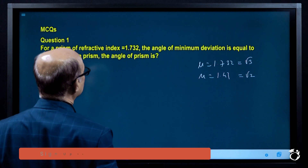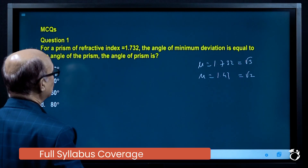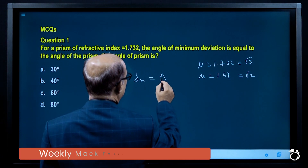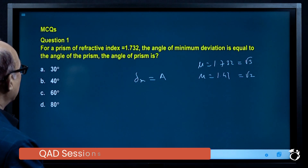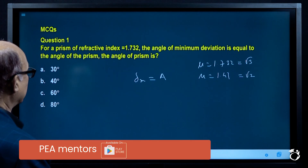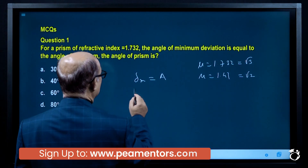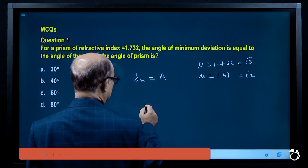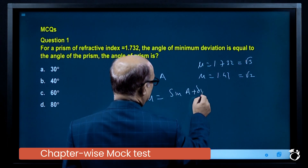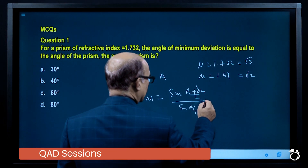Refractive index of the prism is 1.732, and the angle of minimum deviation is equal to the angle of the prism, so δm = A. Using the formula: μ = sin((A + δm) / 2) / sin(A / 2). Since δm = A, this becomes sin(A) / sin(A/2).